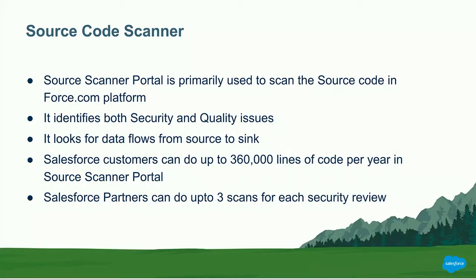The Source Scanner portal is primarily used to scan source code in Force.com. It's completely cloud-based — there's nothing you need to install on your side. You just need to access the portal, put in the username, and you'll get an email with a complete report on all the security issues in the code in your platform. It identifies security issues and quality issues, looking from source all the way to sink to see if there's sanitization in between. For customers, we allow up to 360,000 lines of code scanned per year per org. Partners can do up to three scans for each security review, and after they fail a security review, we reset the scan count back to three.